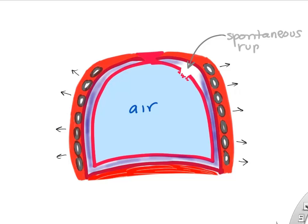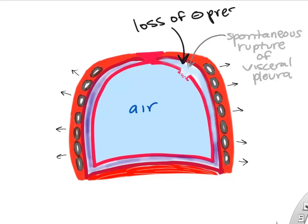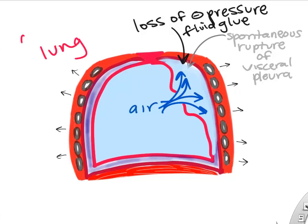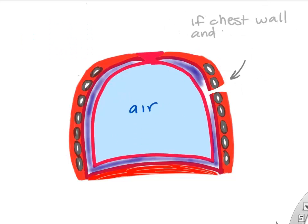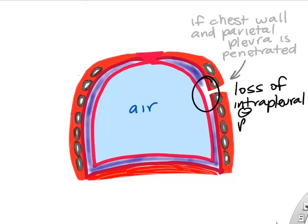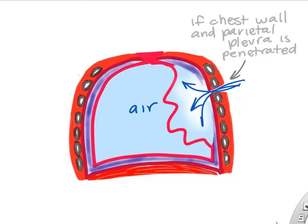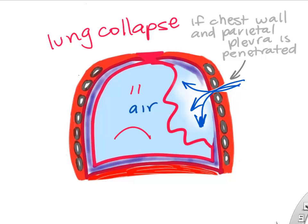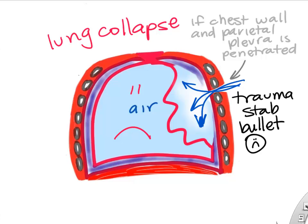If your visceral pleura ruptures spontaneously, air starts to fill that fluid space, we lose the fluid glue and the negative pressure, and our lung collapses like it naturally always wants to. Similarly, if the chest wall is ever pierced and the parietal pleura is disrupted from a stab or trauma, air rushes in due to that negative pressure, and the lung collapses. This shows how important it is to have that negative pressure and fluid in the intrapleural space.